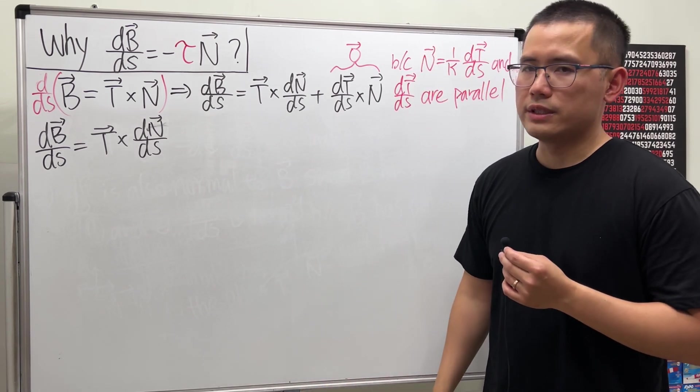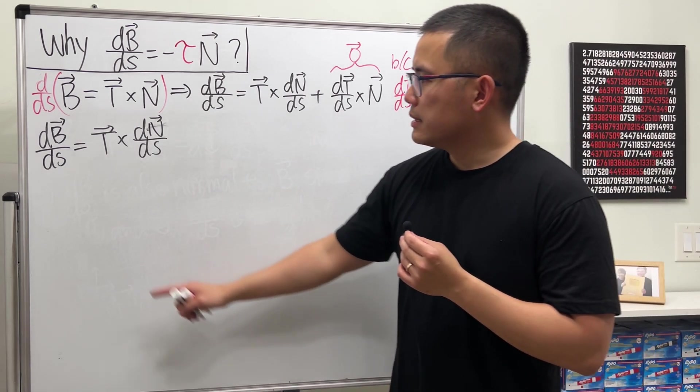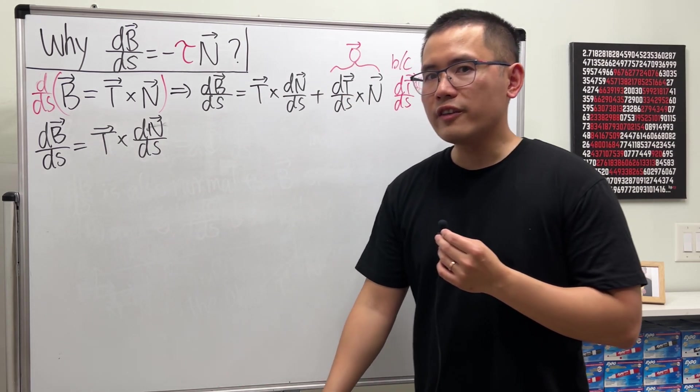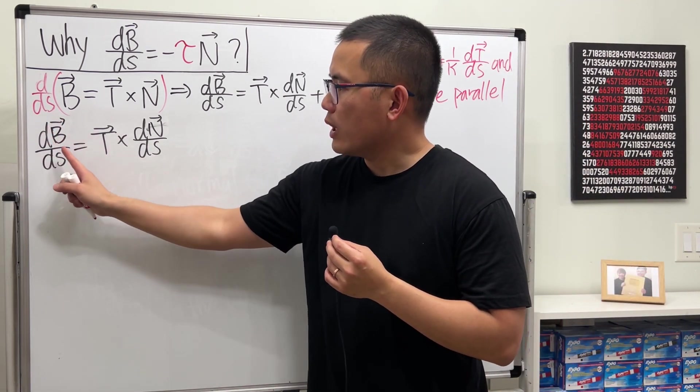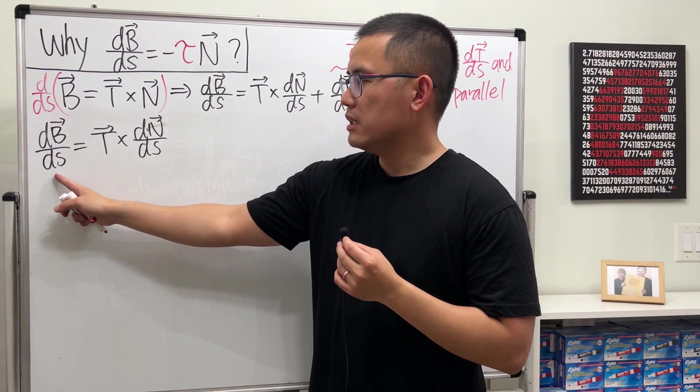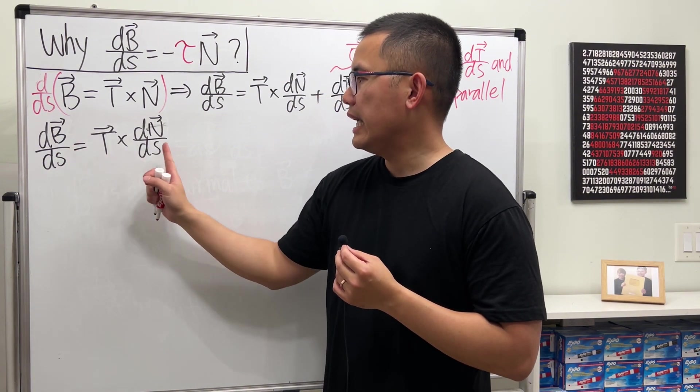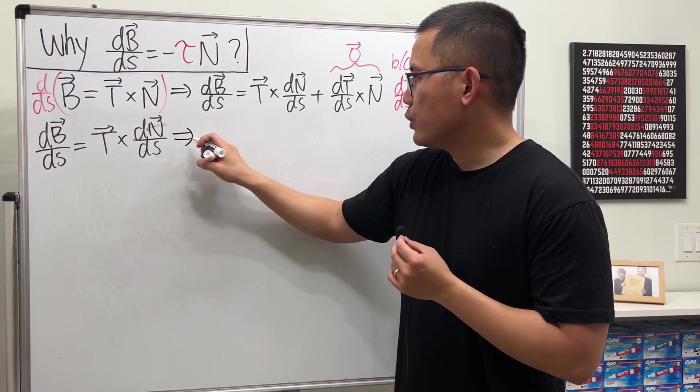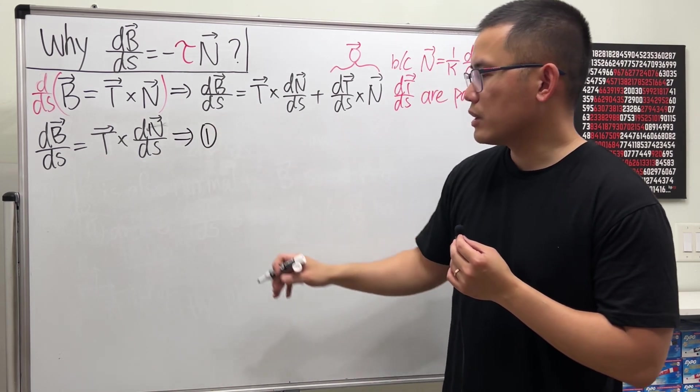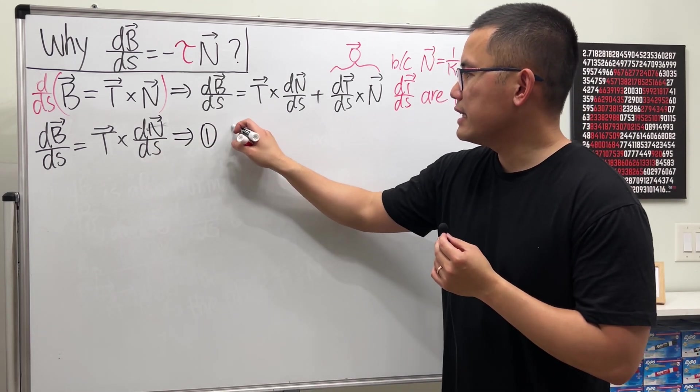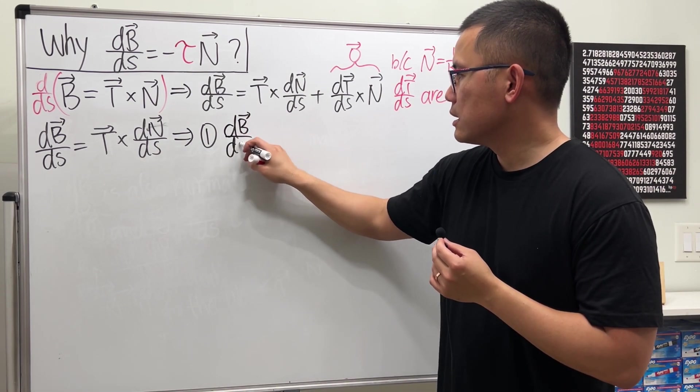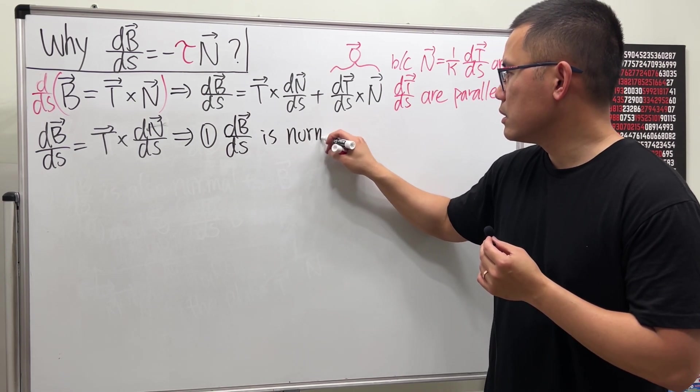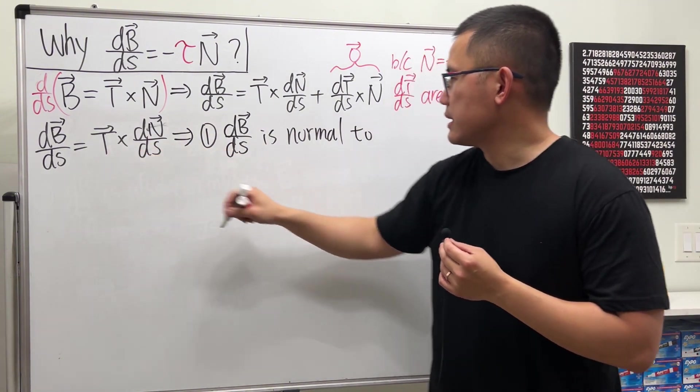Okay, now, what can we say about this? Notice, dB/ds is equal to the cross product of this and that. And one of the properties of being a cross product is that this is normal to both this and that. So let's just focus on this right here. From this equation, we can say that's the first condition that we need. We can say that dB/ds is normal to the vector T.